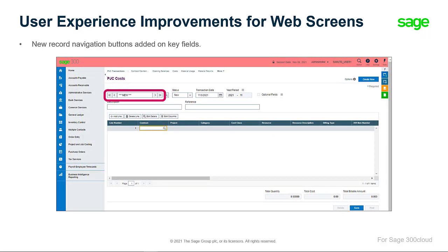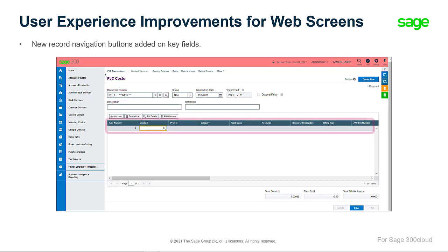New navigation buttons have been added on key fields that can be used to move to the First, Previous, Next, and Last records. These new record controls allow you to move forward and backward one record at a time or through several records, similar to the desktop UI. Users can now quickly enter data in the grid using shortcut keys on the PJC Transactions web screens.